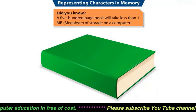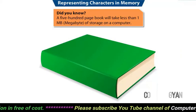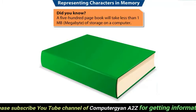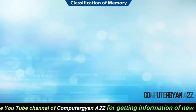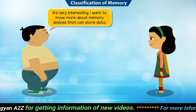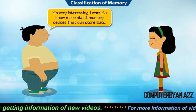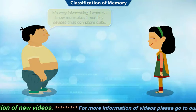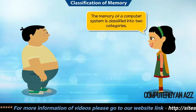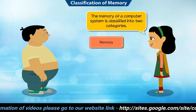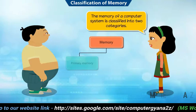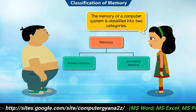Do you know a 500-page book will take less than one megabyte of storage on a computer? It's very interesting. I want to know more about memory devices that can store data. There are different types of memory devices used in computers to store data. The memory of a computer system is classified into two categories: primary memory and secondary memory.